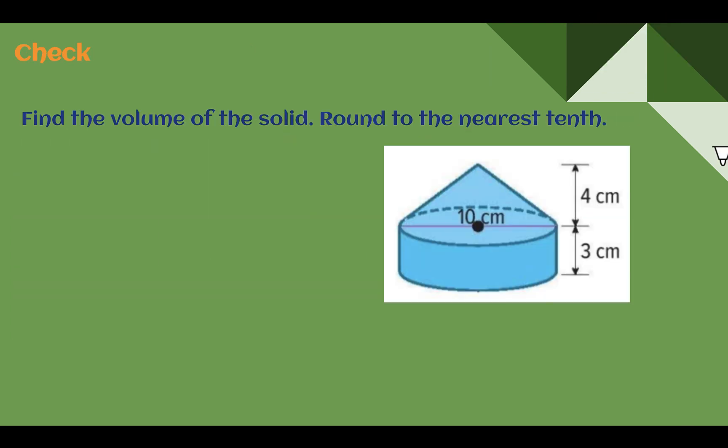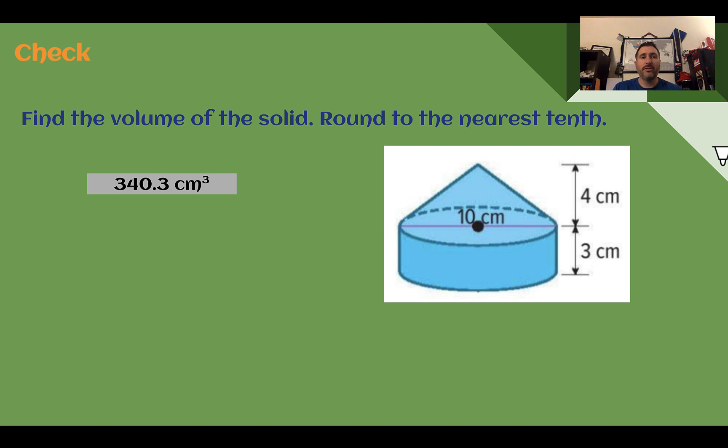Check your understanding. Find the volume of this solid. Pause the video now and complete the check. Check your answer. You should have found 340.3 cubic centimeters. So to find this, we're going to combine the two shapes. We're going to add them.